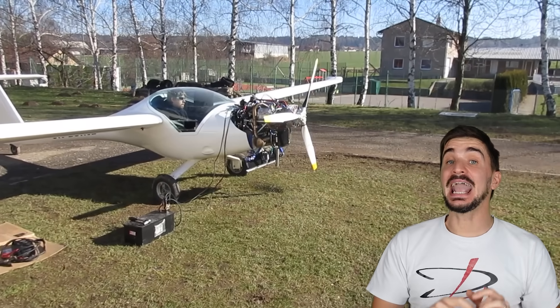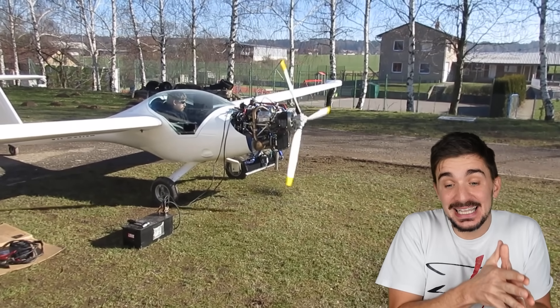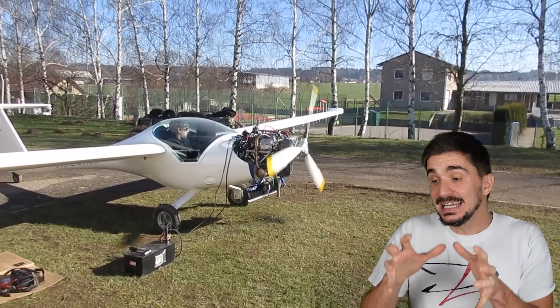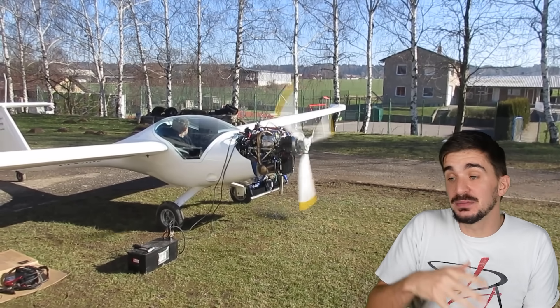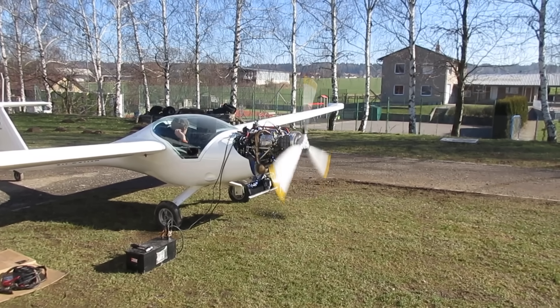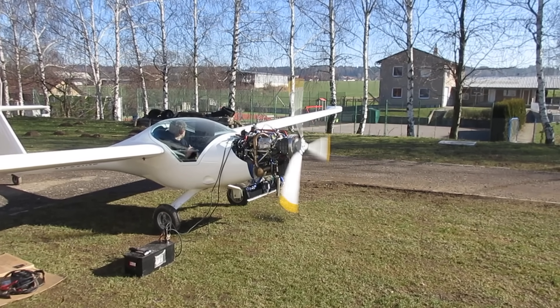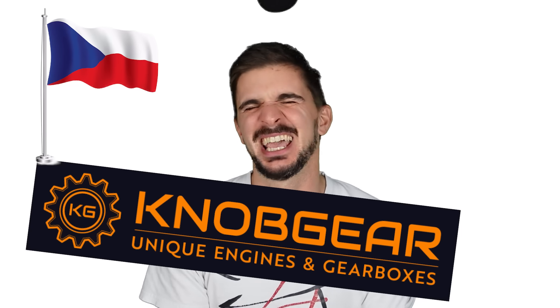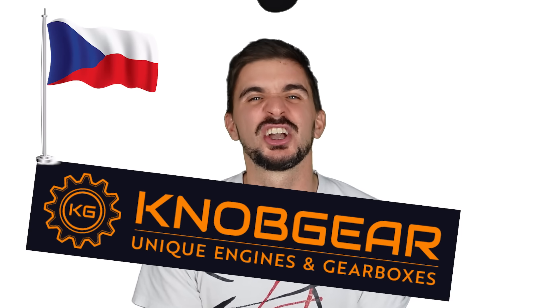Well, that's because this is an aerial engine, which means that it's designed to spin a propeller. And propellers, they need to rotate slower than a combustion engine in order to remain efficient. Yes, propeller. That's how I pronounce it. What are you going to do about it? You know what's the name of the company that makes this engine? It's called Knob Gear. Yes, Knob. It's a Czech surname. No, it's not Knob. It's Knob.